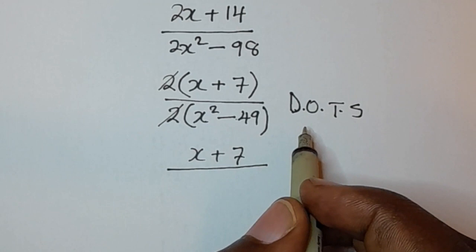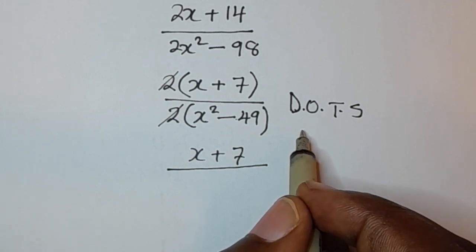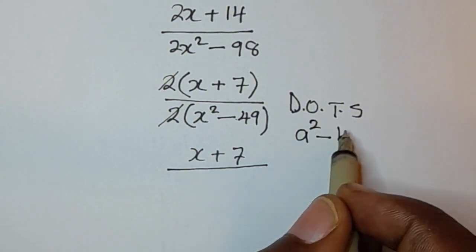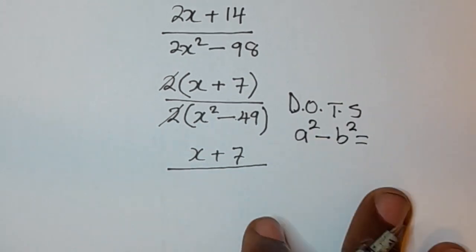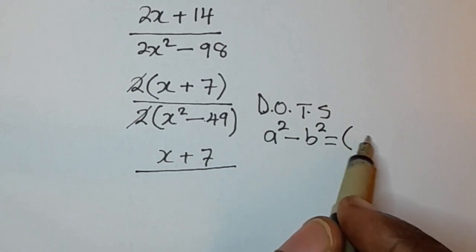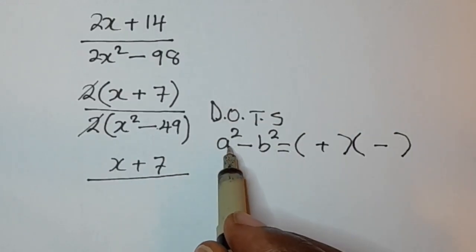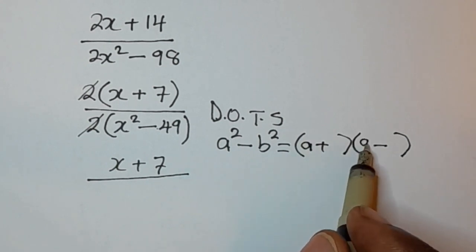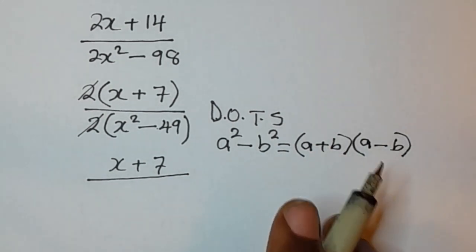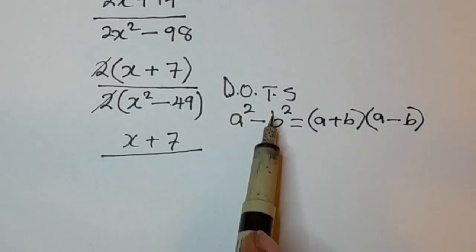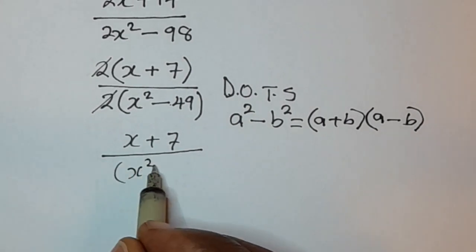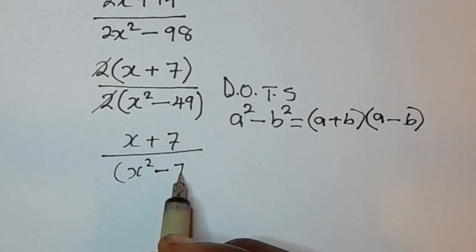The difference of two squares states: if you have a square number a subtracting another square number b, then to factorize this you get (a + b)(a − b) — the square root of a and the square root of b in each factor. So now we're going to apply this: x squared minus 49, where 49 is 7 squared, fits this form.